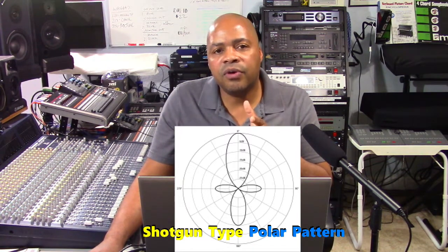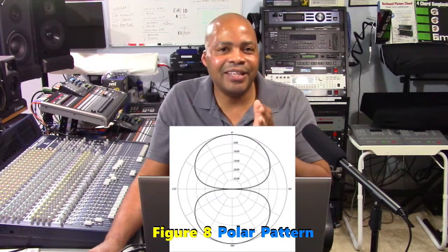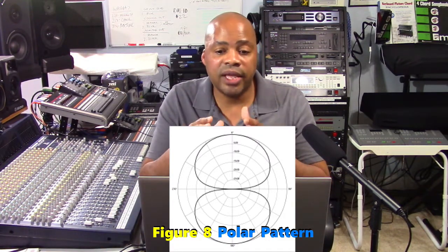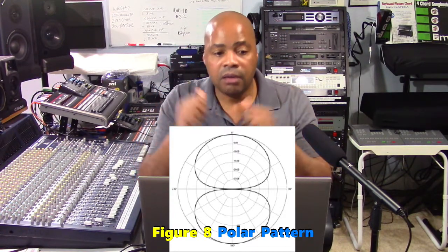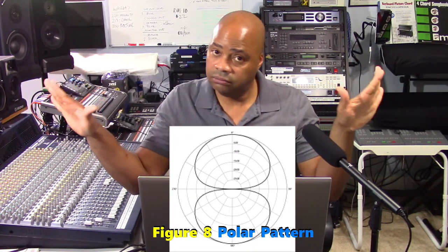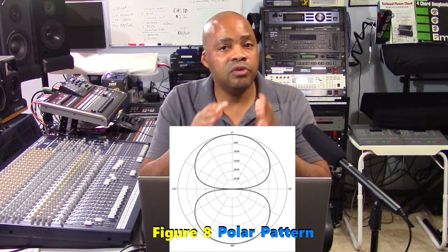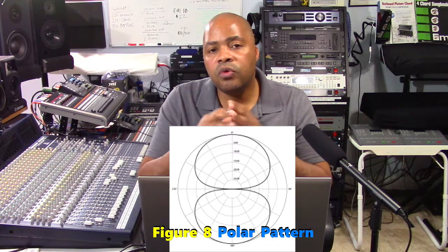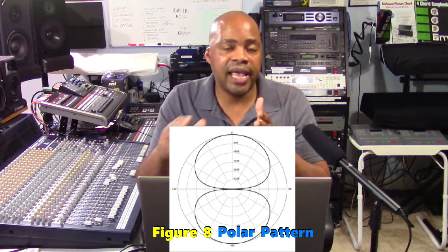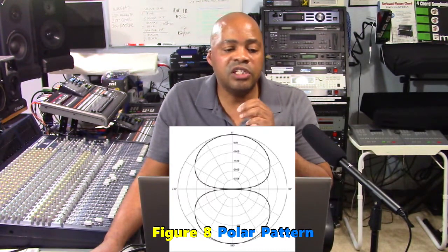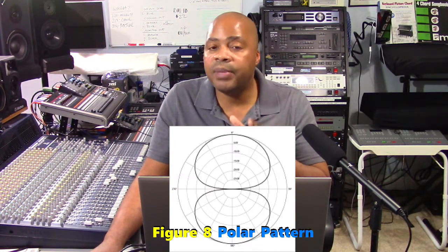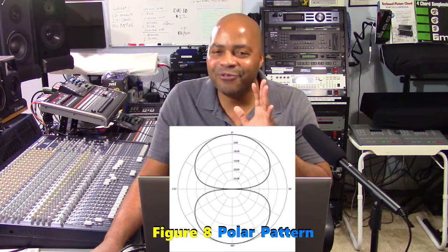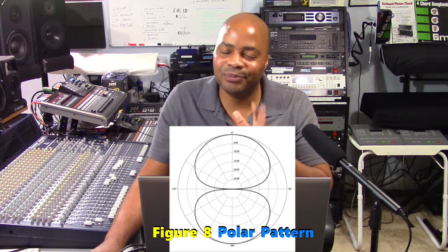The next type of microphone is called a figure eight microphone. These microphones pick up sounds directly from the front and from the back, but not from the sides. This feature makes them great for stereo sound capture or for when you want to record more than one sound source at a time. This specific polar pattern is common in large diaphragm condenser microphones and ribbon microphones.